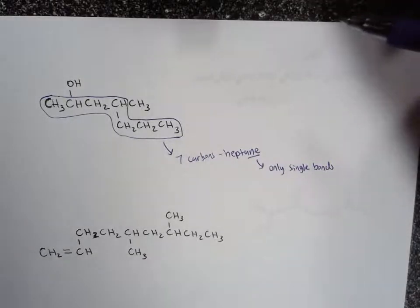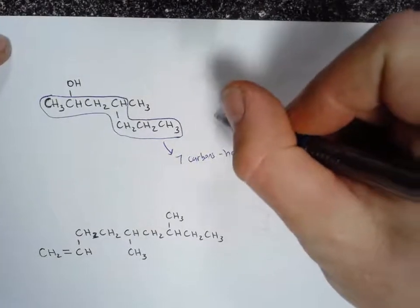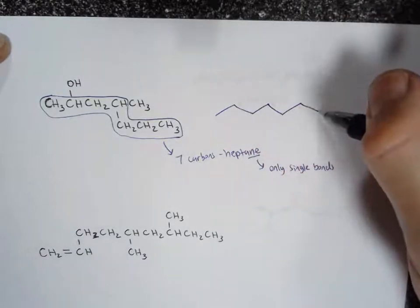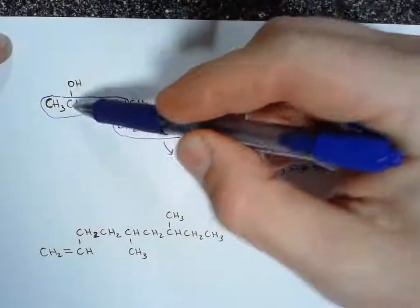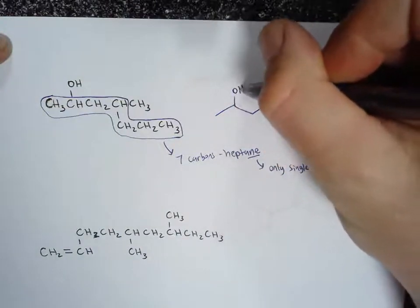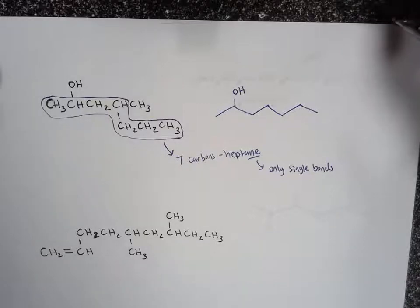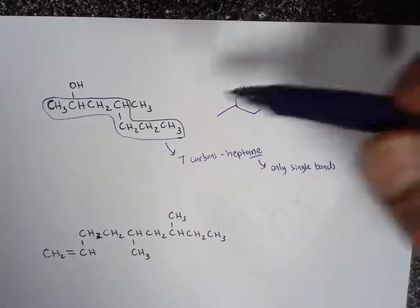Now let's go ahead and convert this to a skeletal structure: 1, 2, 3, 4, 5, 6, 7. And then on this side I'm going to go one carbon over — so this is one, this is number two. We haven't learned how to number with functional groups, so we're not going to worry about the numbering for this particular one. Whenever you have functional groups like alcohols, aldehydes, and ketones, the numbering changes — we're not going to worry about that. For this one we're just going to go left to right. On the next few we will do numbering though.